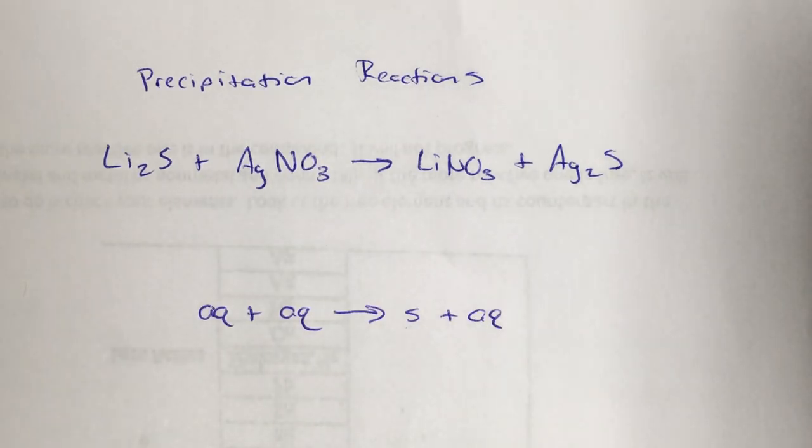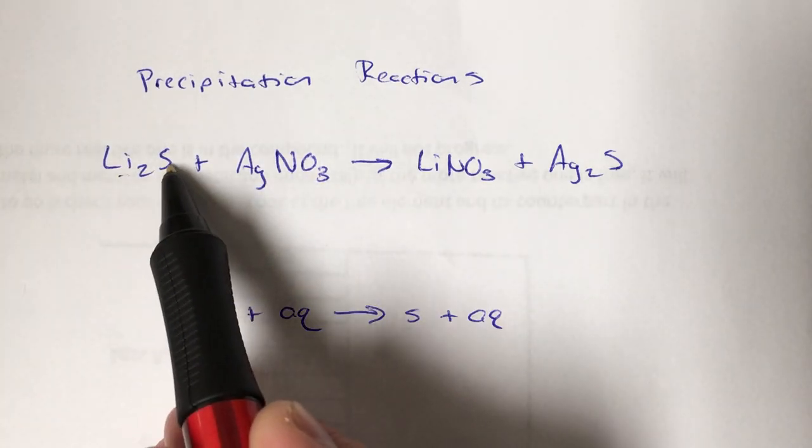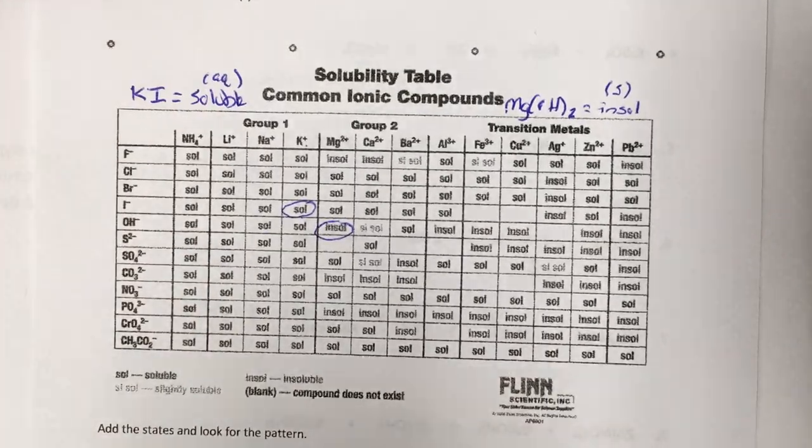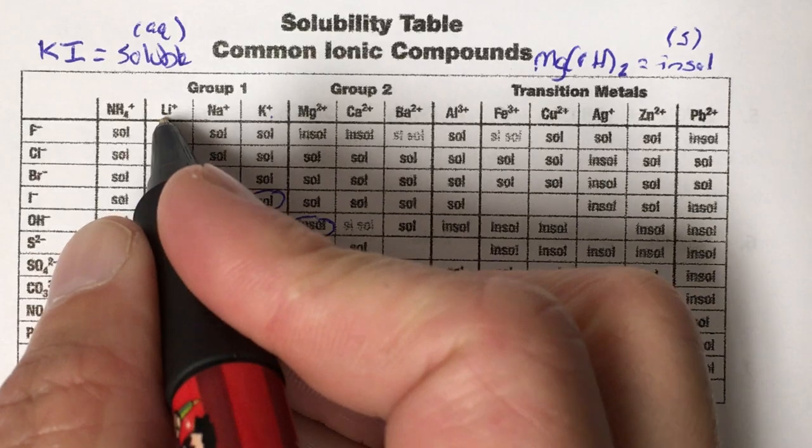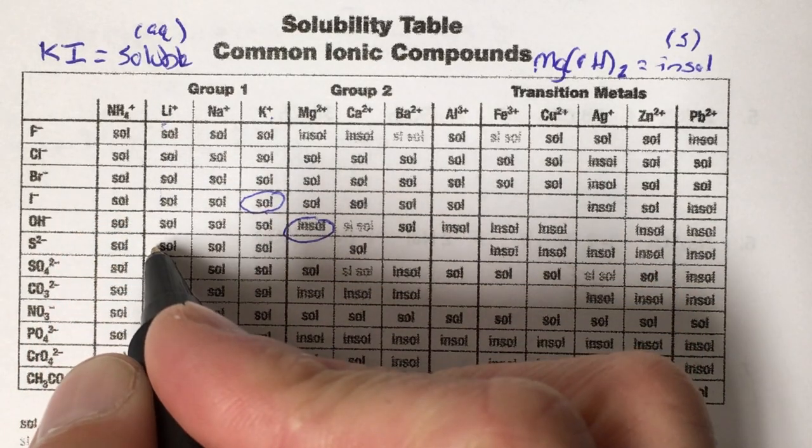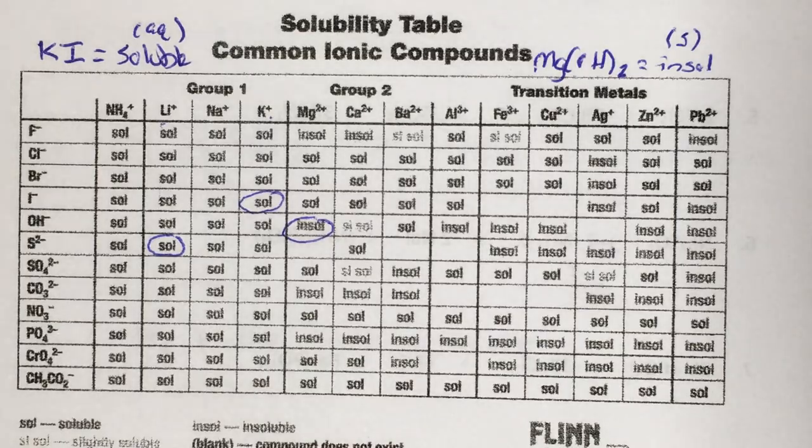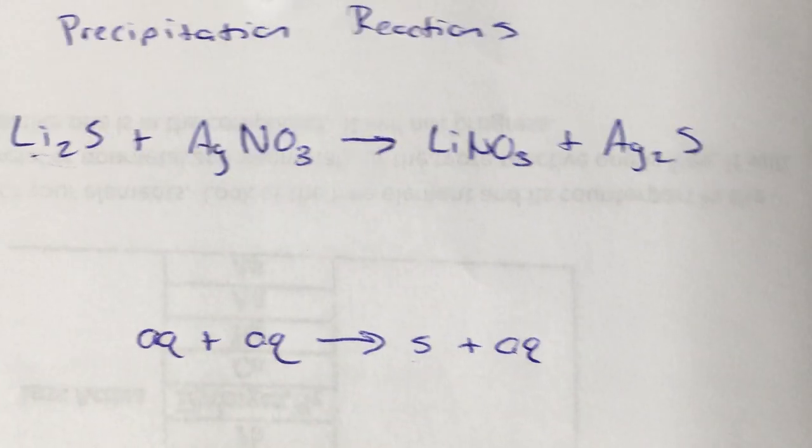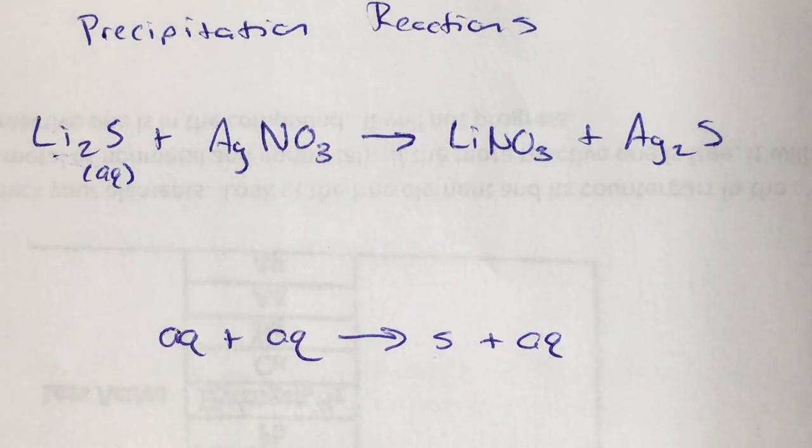So let's go through this reaction here and figure out if it is a precipitation reaction or not. So our first substance is the lithium sulfide, Li2S. So we go to our table here. We find lithium right there. We come down to the sulfur row. And it's got soluble written in it. So that means in our equation here, we're going to call this an AQ. That dissolves in water.